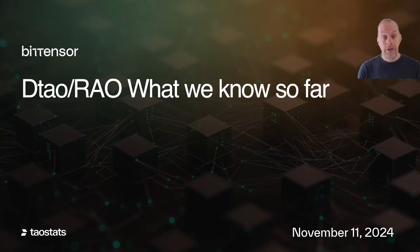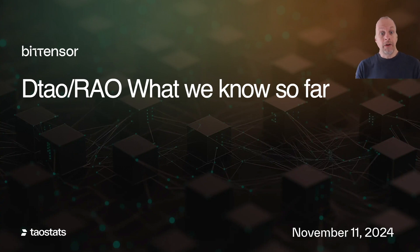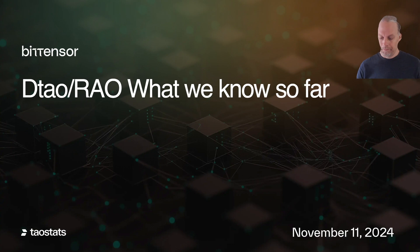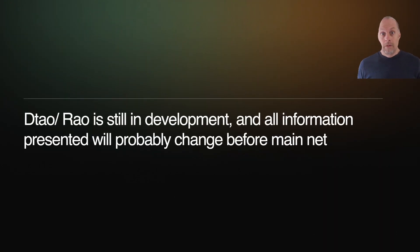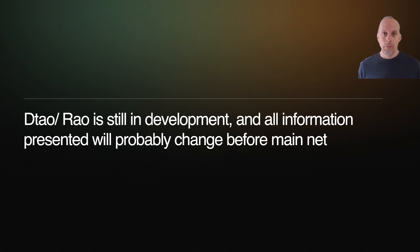One of the most anticipated features in the BitTensor network is DTao, sometimes also called RAO. In this video, we're going to give a quick update on what we know so far. I'm dating this November 11th because this video might be out of date later today or tomorrow. Just a caveat — this is under development, it's going to change, and what shows up in mainnet is going to be completely different from what we see today. But this is just so people can get an idea of what's going on.